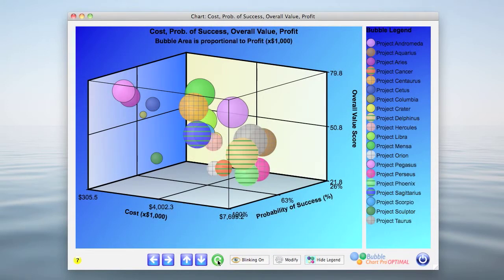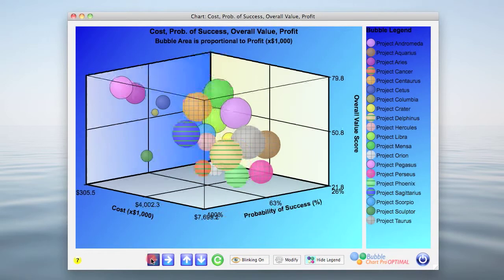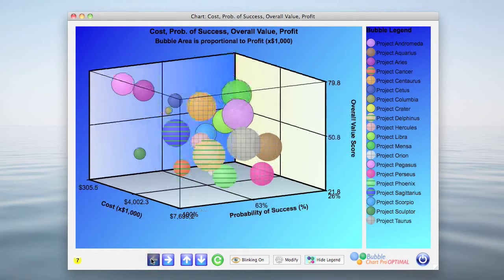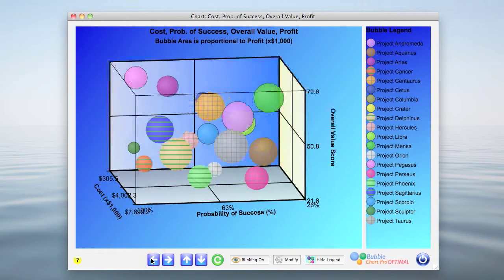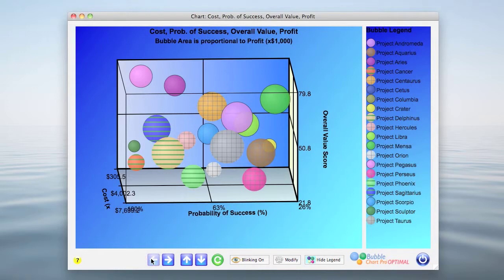Next, we'll rotate clockwise or to the left so that we can see the relationship between probability of success, which is now on the horizontal axis, and the overall value score on the vertical axis. And we'll return to the default view again by clicking on the green reset button.